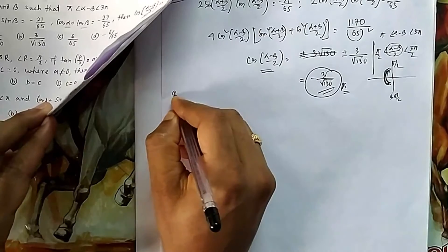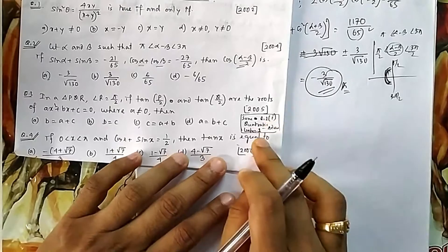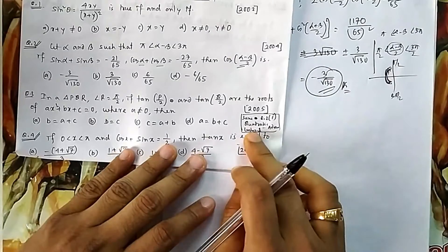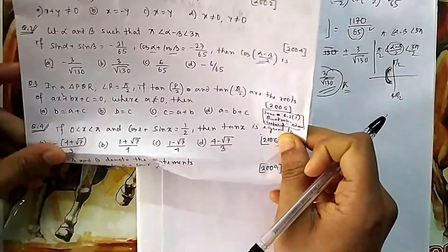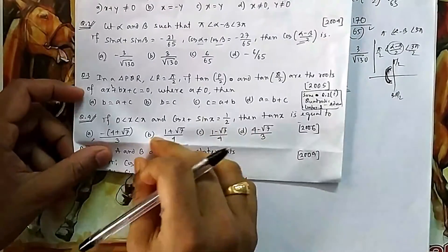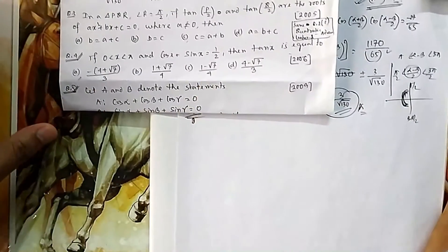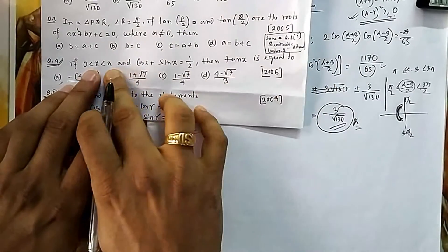Question number 3 has already been solved — it is question number 2 from the advanced level quadratic lecture 1, which you can check out. This shows that questions repeat from IIT advanced to JEE Main, so the concepts remain the same. Here in this question, x is given, cos x + sin x is also given, and we need to find tan x.